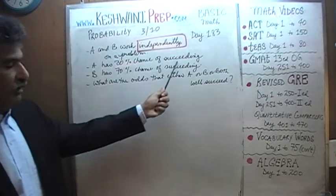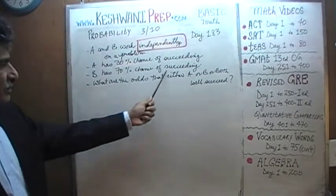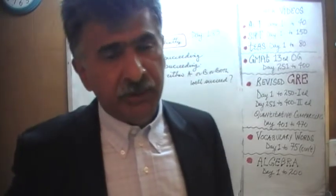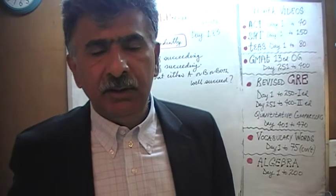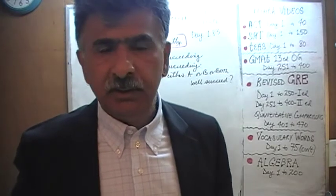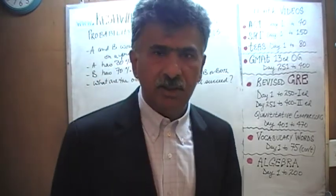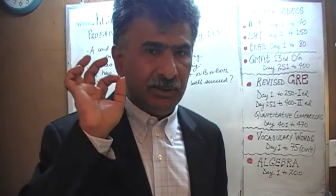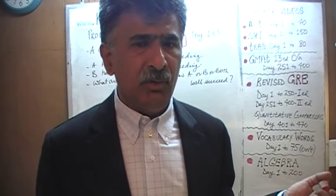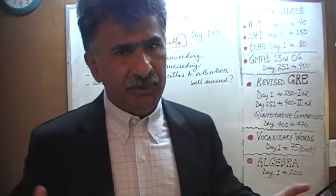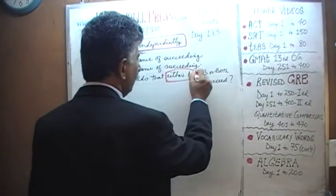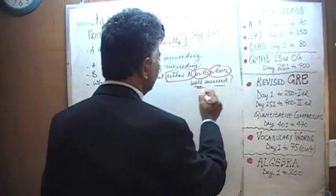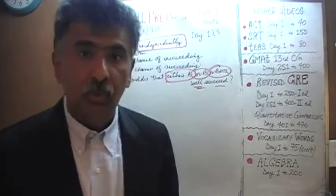We are told that A has a 30% chance of succeeding and B has a 70% chance of succeeding at this problem. Usually they talk about solving a problem, or the question might say that A has a 30% chance of hitting a target and B has a 70% chance of hitting a target. The odds of whether A will hit a target has absolutely nothing to do with how likely B is of hitting the target — these two events are independent. The question is: what are the odds that either A or B or both will succeed?